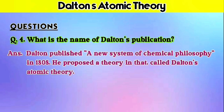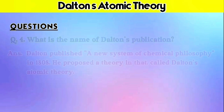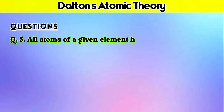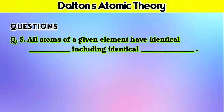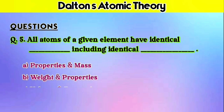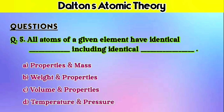Question 5: All atoms of a given element have identical — including identical —. Options: A) properties and mass, B) weight and volume, C) volume and properties, D) temperature and pressure. The answer is A) properties and mass — because according to Dalton's atomic theory, all atoms of any given element have identical properties including identical mass. So that was it for today's video. Hope you understood all the things about Dalton's atomic theory. See you in the next video — bye bye!